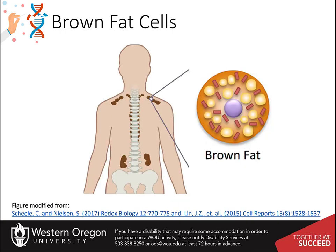Brown fat, also known as baby fat, is used to generate heat. Adults only have limited quantities of brown adipose tissue. Brown fat cells are plurivacuolar and have a considerable cytoplasm with lipid droplets scattered throughout. The nucleus is round and is not in the periphery of the cell. The brown color comes from the large quantities of mitochondria.